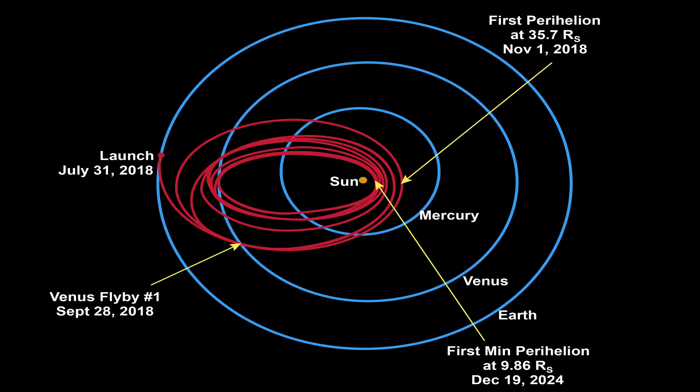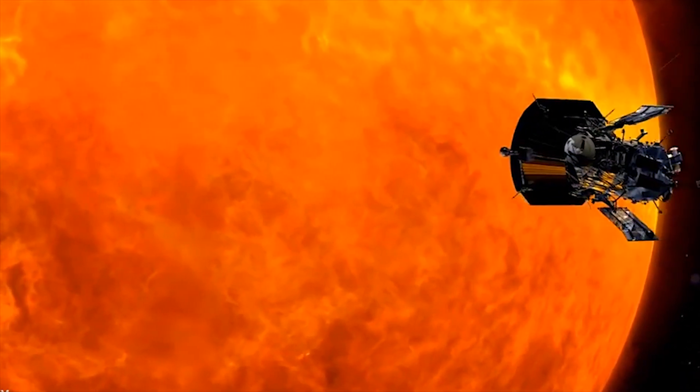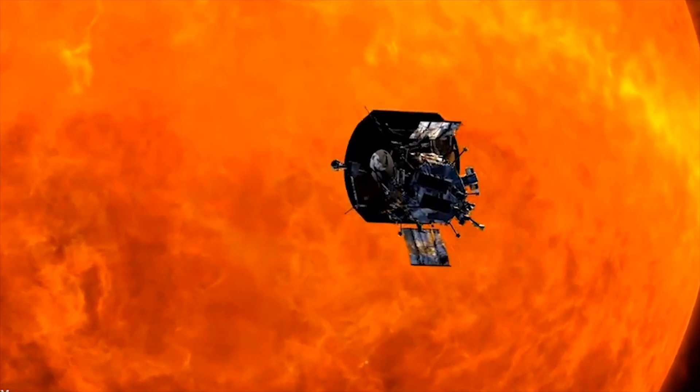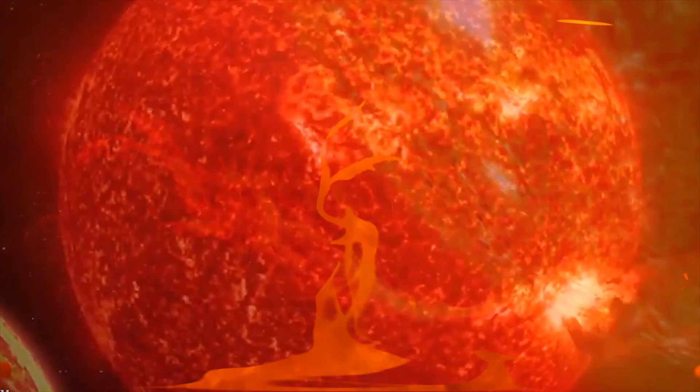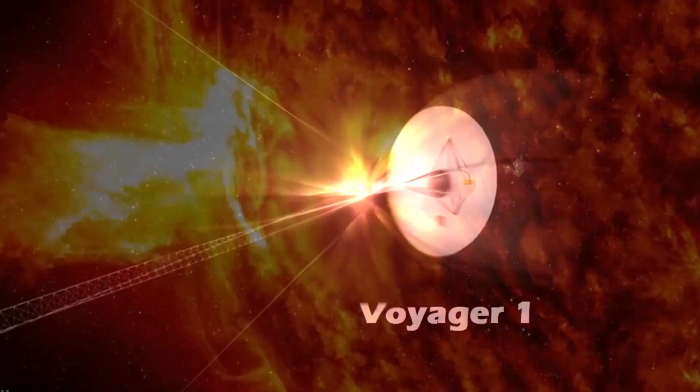This is seven times closer than Helios 2 of 1976. At that point it will reach the speed of 195 kilometers per second, breaking the record of Voyager 1, which is just 17 kilometers per second and is the fastest spacecraft at present.